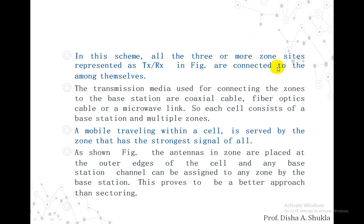In this scheme, all three or more zone sites are represented as TX/RX — transmitting power TX and receiving power RX — and all of them are connected among themselves. The transmission medium used for connecting the zones to the base stations includes coaxial cable, fiber optic cables, or microwave lines.